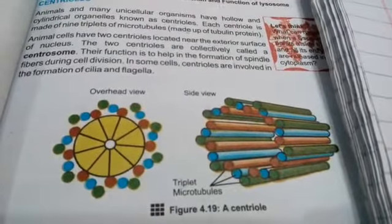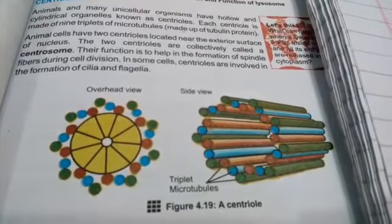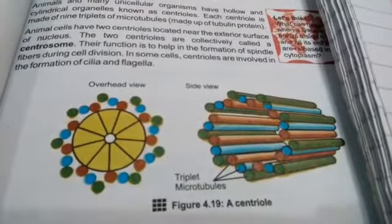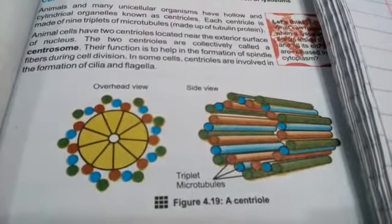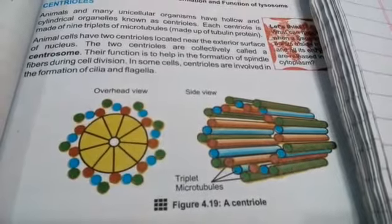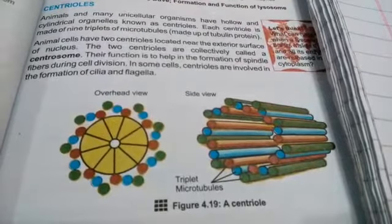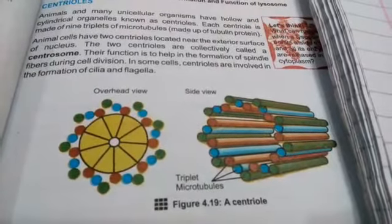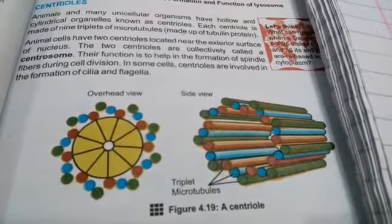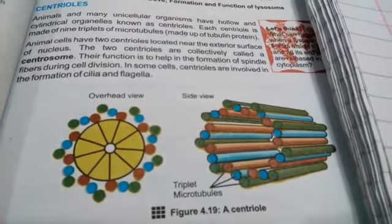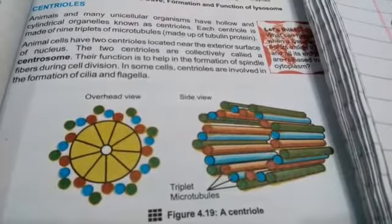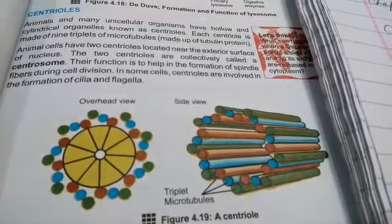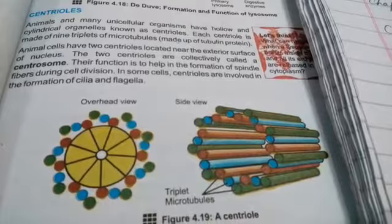The centrioles are responsible for cell division. They help in the formation of cilia and flagella, and in some cells, centrioles help in the formation of cilia and flagella.